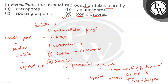We can say that in Penicillium the asexual reproduction takes place by the answer, which is option D, that is conidiospores. In the asexual mode of reproduction of Penicillium there is formation of spores known as conidiospores, which are further expelled out. So the answer to this question will be option D.